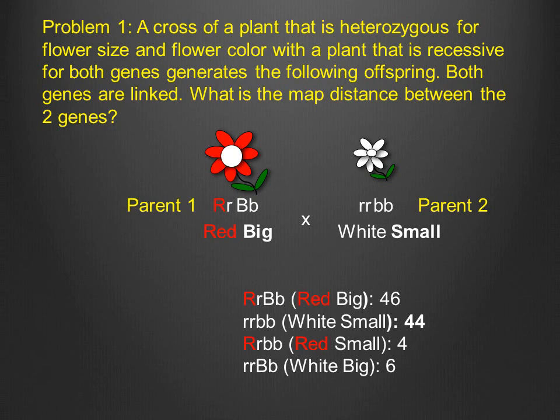In the first problem, we are given a cross of an individual that is double heterozygote for the two genes with one that is double recessive for the two genes. Our task is to determine the map distance, in other words, the recombination frequency, between the two genes.